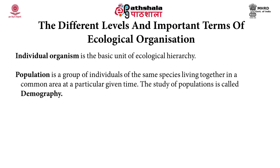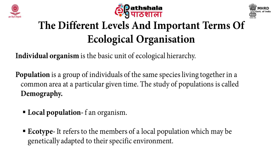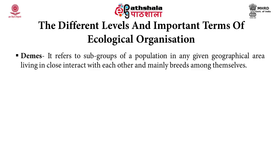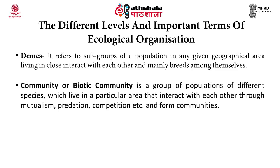Population can be of different types. Local population refers to the different populations of the same kind of organisms. Ecotype refers to members of the local population which may be genetically adapted to their specific environment. Demes refers to the subgroup of the population in any given geographical area living in close interaction with each other and mainly breeding among themselves. Community or biotic community is a group of populations of different species which live in a particular area, interacting with each other through mutualism, predation, competition, etc., and forming communities.